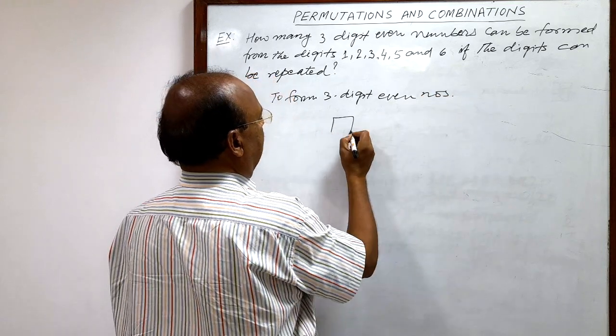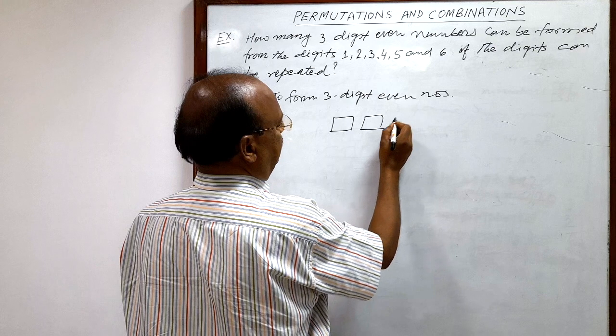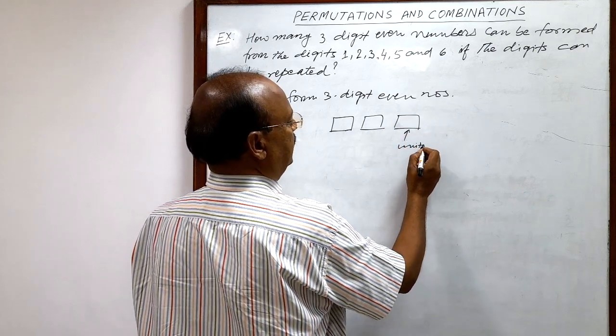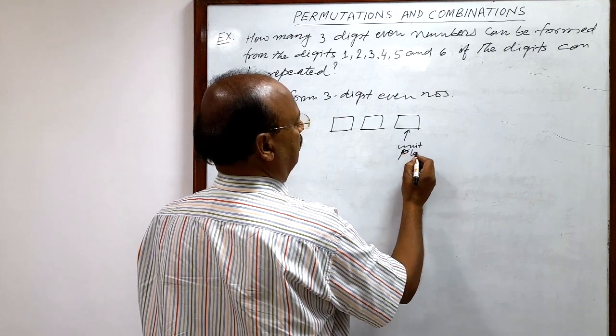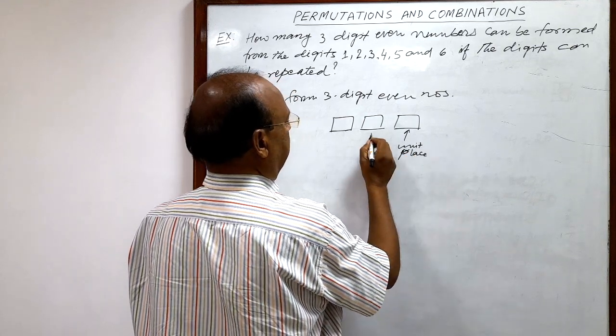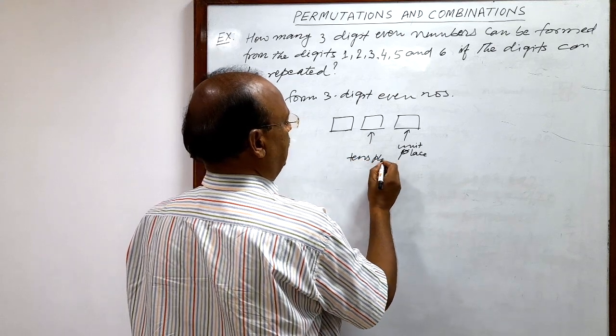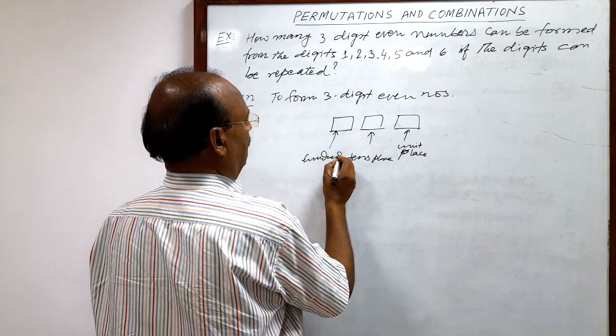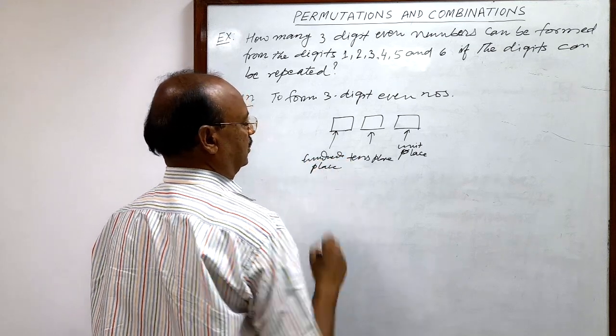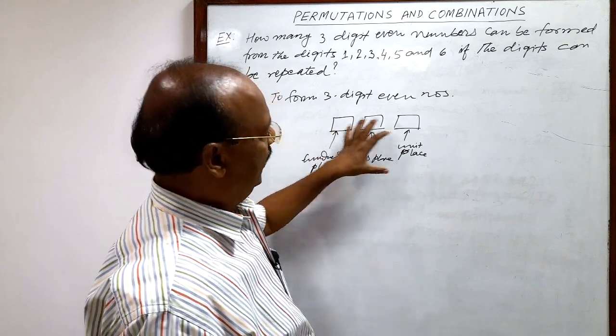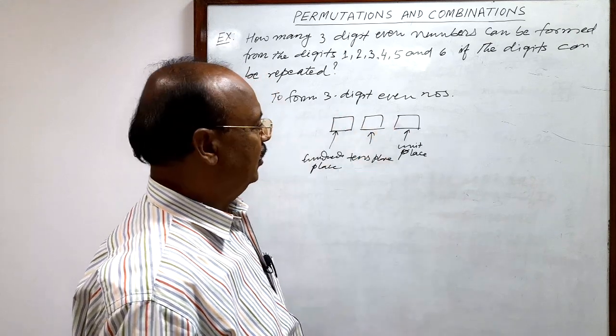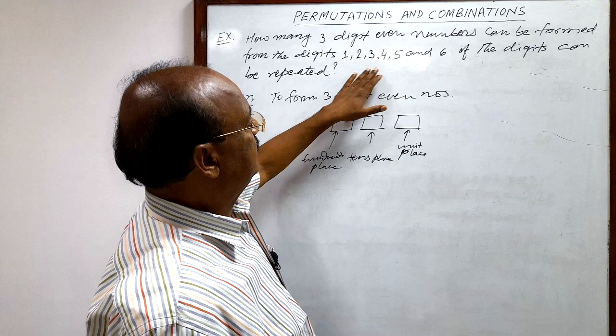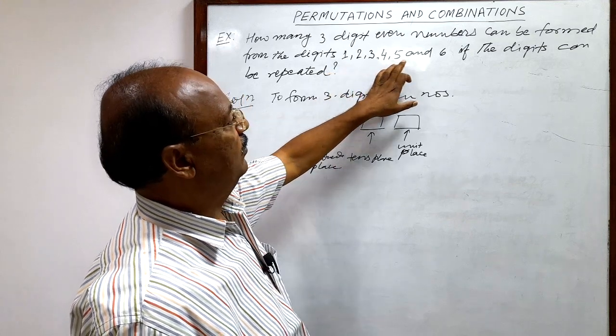So there will be three places for the digits. As you know this is digit at units place, unit place, this is the digit at tens place and this is the digit at 100 place. So in this way three digit number can be formed and the required digit must be even number. And here given digits are 1, 2, 3, 4, 5 and 6.